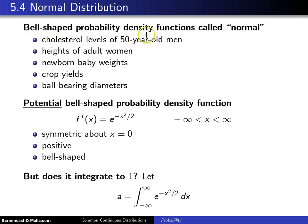Here are a couple of places where a probability density function that has that bell shape may show up: the cholesterol levels of 50-year-old men, the adult heights of women, the weights of newborn babies, crop yields, and ball bearing diameters. All of these random variables are going to have a bell-shaped probability density function or something fairly close to it.